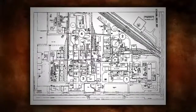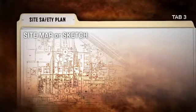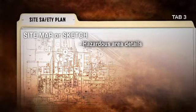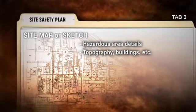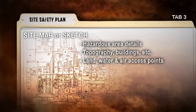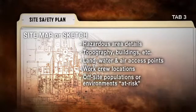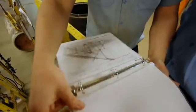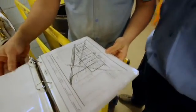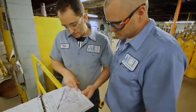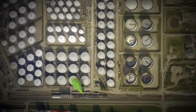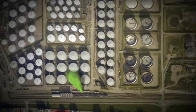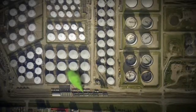The plan should include a site map or sketch of the incident area, large enough to clearly show pertinent details and posted in a conspicuous place. Components of the map should include details of hazardous areas, site terrain, topography, buildings and barriers, land, water, and air access points, work crew locations, and off-site populations or environments at risk. The site map is used for planning, training, and developing emergency response strategies. Since the exact location of an incident cannot be known in advance, this part of the plan cannot be prepared ahead of time and should be outlined on a pre-printed map or sketched by hand.